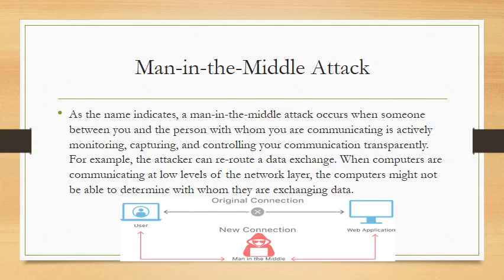As shown in the picture, you can see traffic being rerouted. The attacker tries to get in the middle and reroute data exchange over the network. When computers are communicating at low levels, computers might not be able to determine with whom they are exchanging data, making it easier for the attacker to analyze and intercept the network, especially when it is full of traffic.